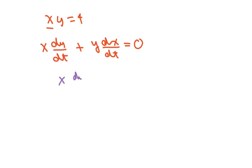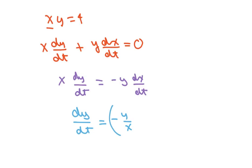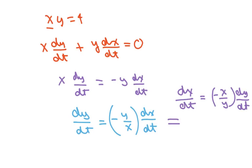I'm going to rewrite this and divide both sides by x, so I'm going to get the derivative of y with respect to t equals negative y over x times the derivative of x with respect to t. Also, I can just cross multiply here and write the derivative of x with respect to t equals negative x over y times the derivative of y with respect to t. So basically what I'm doing is solving for the derivative of y with respect to t and solving for the derivative of x with respect to t given our information.